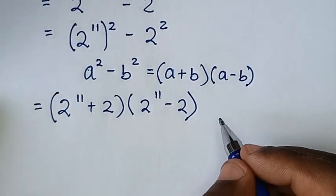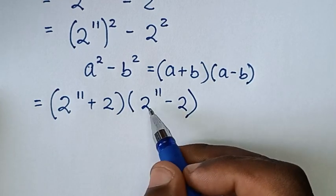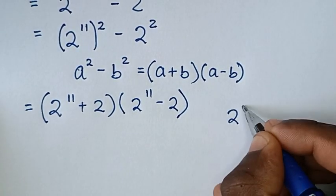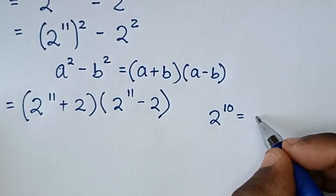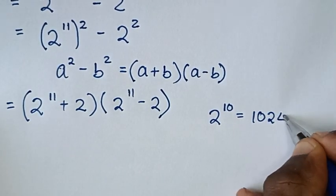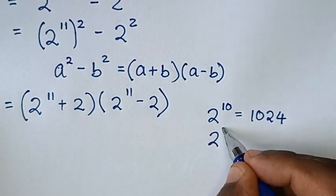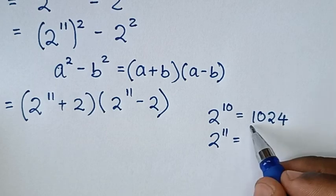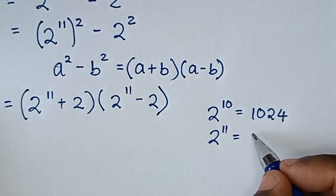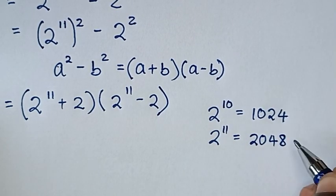Then from here, 2 power of 11: what is 2 power of 11? We know that 2 power of 11 is equal to 1024. So 2 power of 11 times 2 will be 2048.